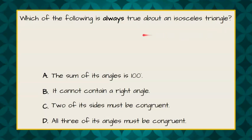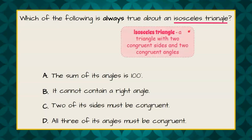Welcome back. So, here we're being asked about an isosceles triangle. And an isosceles triangle is a triangle with two congruent sides and two congruent angles. Reminding you that congruent means equal, the same size.